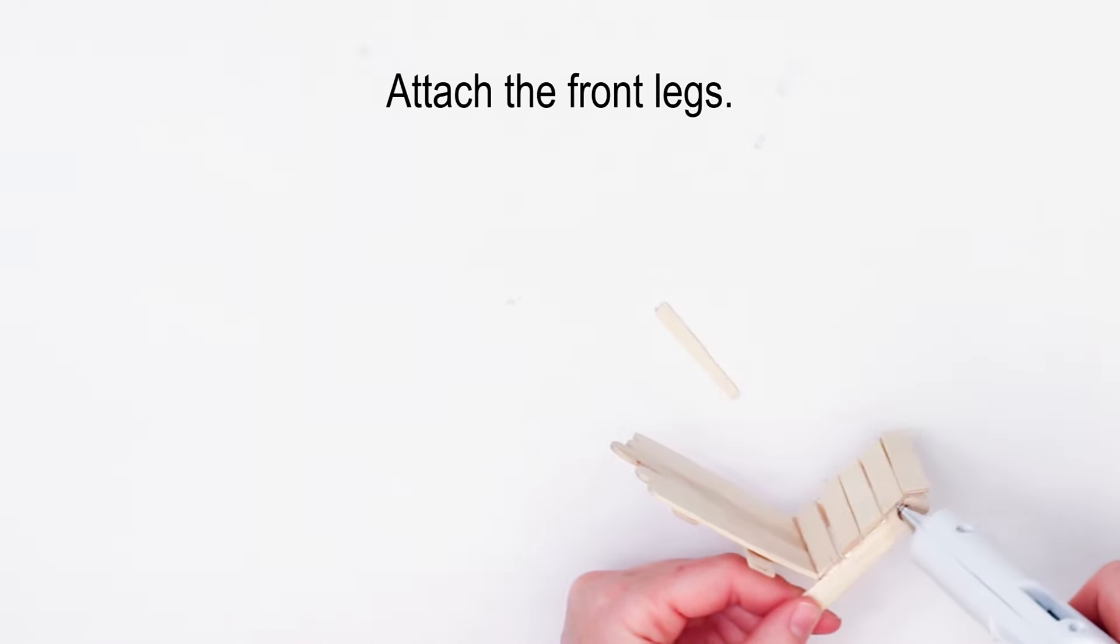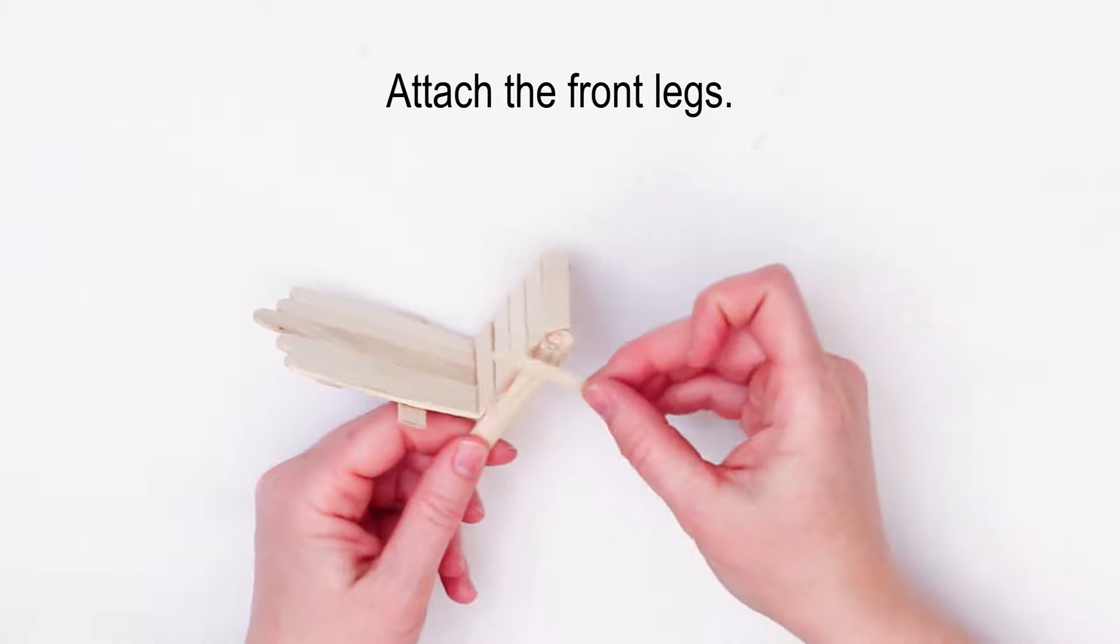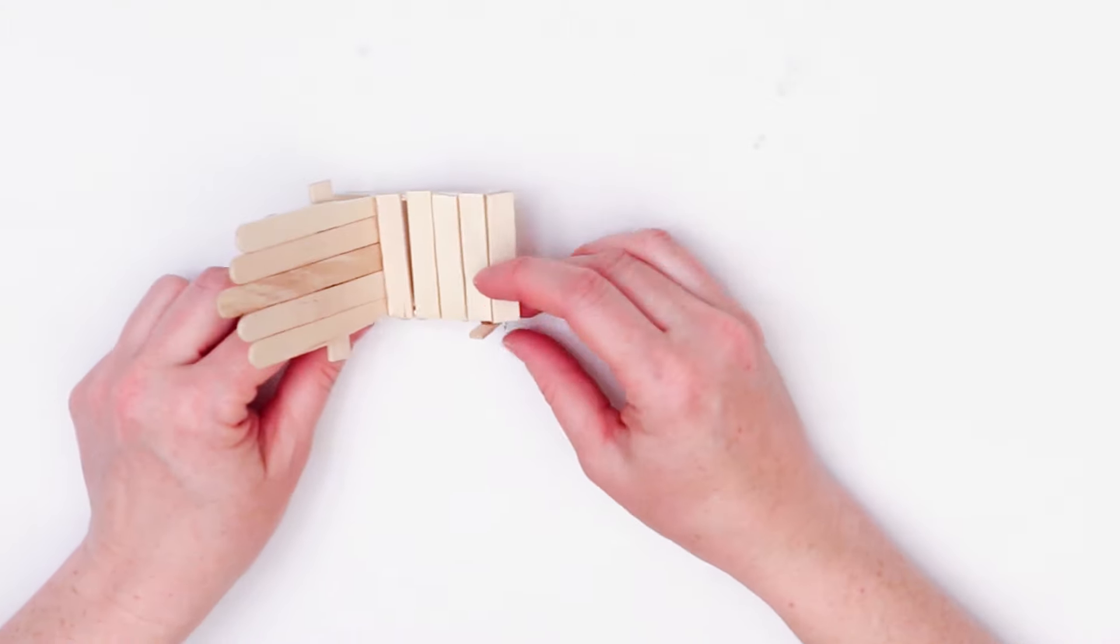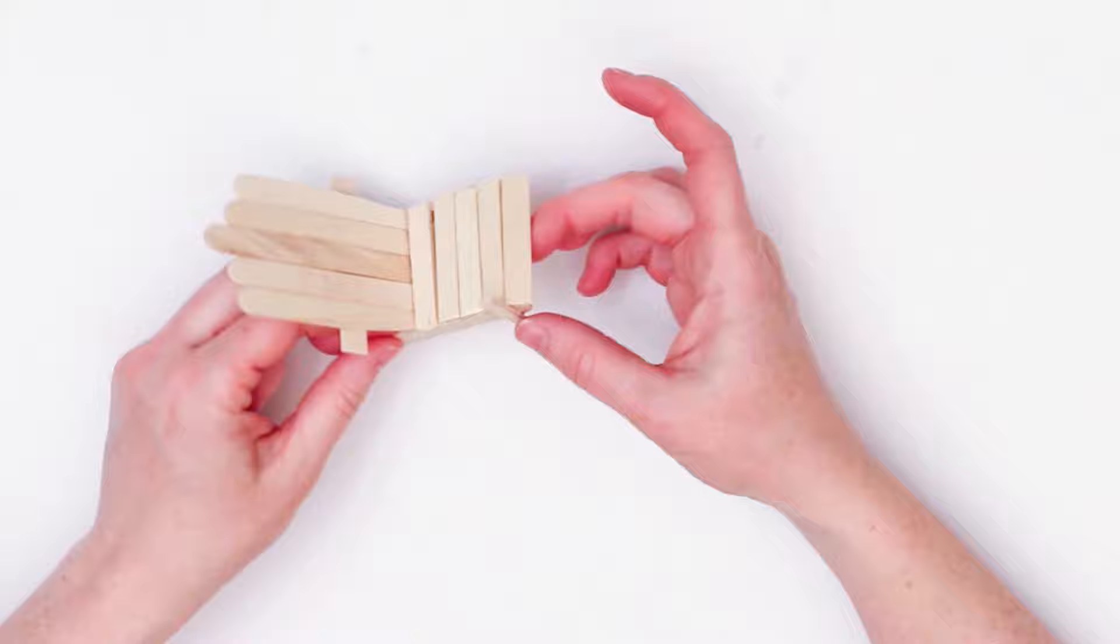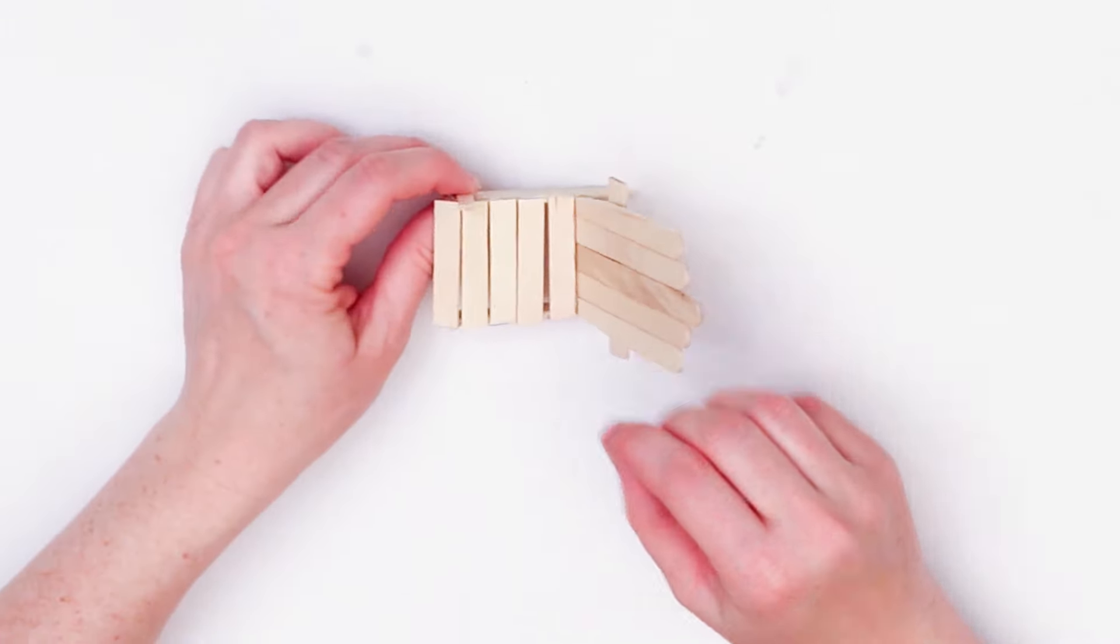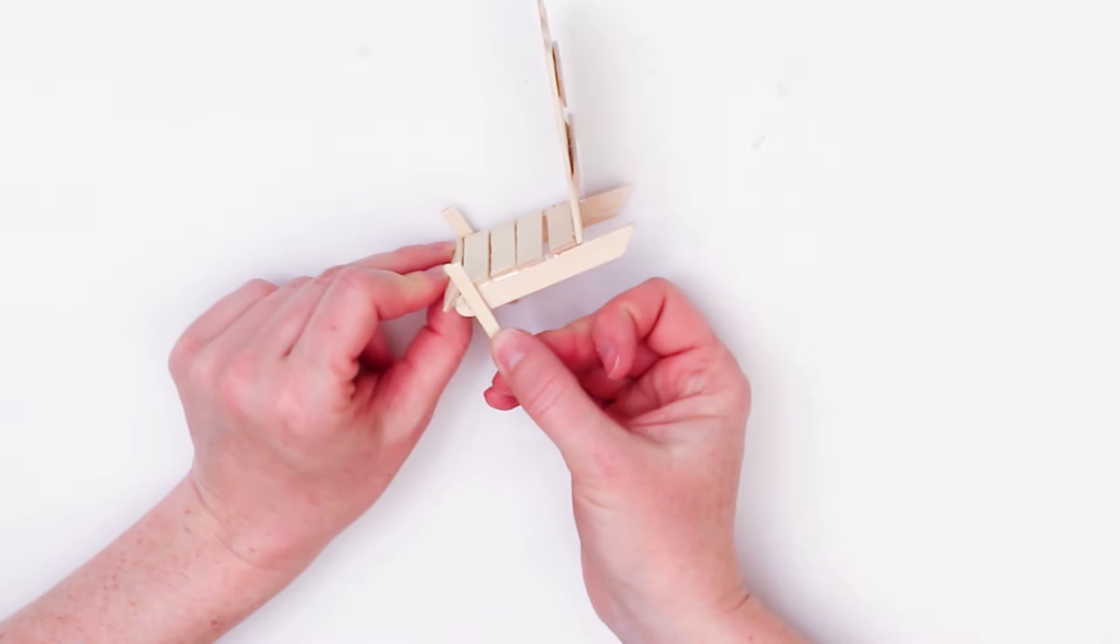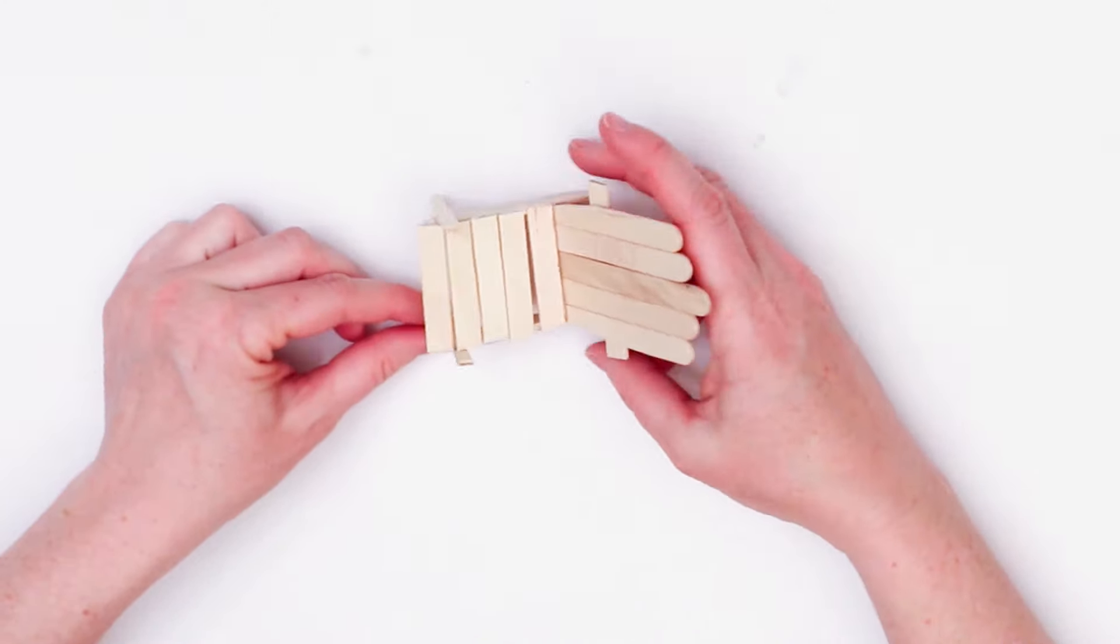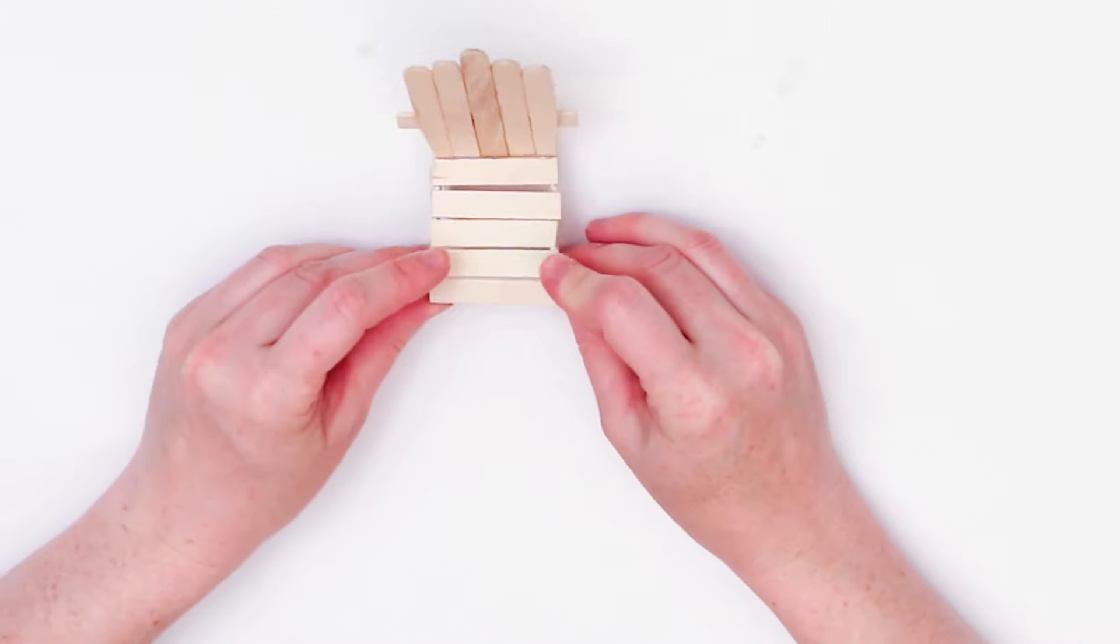So next we're going to add on those little front legs as shown. And this is a great time before the glue completely sets to make sure your chair is sitting as flat on the ground as possible.